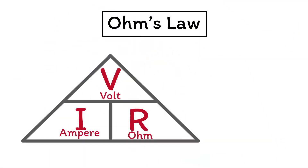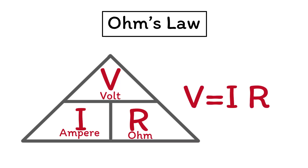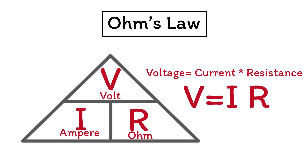Ohm's Law describes the relationship between voltage, current, and resistance. You have likely seen this equation before: V equals I times R, or voltage equals current times resistance. Voltage is measured in volts, current is measured in amperes, and resistance is measured in ohms.